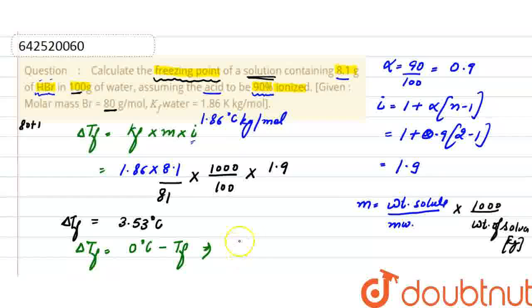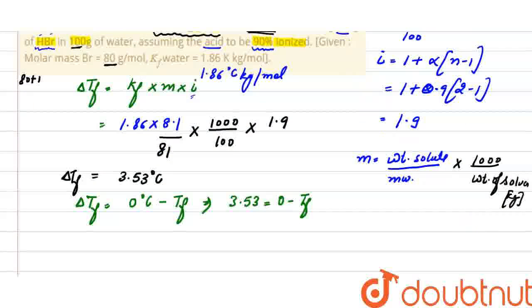ΔTf = 3.53 = 0 - Tf(solution). Therefore, the freezing point of the solution is -3.53°C.